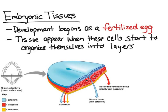In this video, I'm going to talk about embryonic tissues. Just a little bit of background: we all know human development begins as a fertilized egg. So the first step in something becoming a human would be the egg becoming fertilized. A fertilized egg is step number one, and then the egg divides to produce a lot of identical smaller cells. The first type of tissues will appear when these cells start to organize themselves into layers.